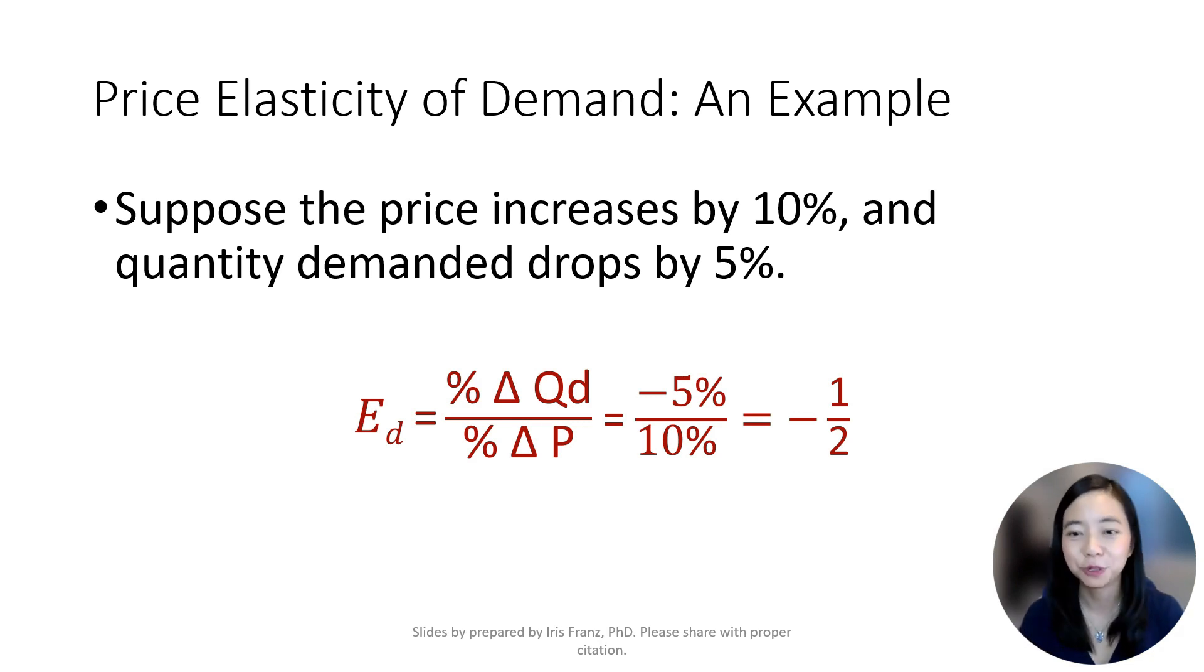which is negative 5%, divided by the percentage change in price, which is positive 10%. That will give you negative one-half.